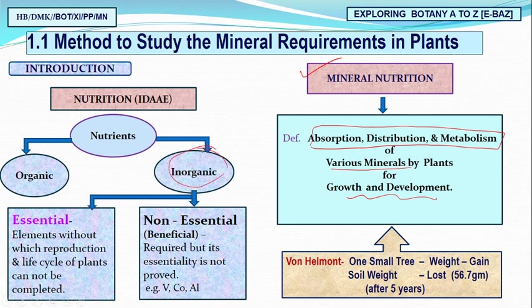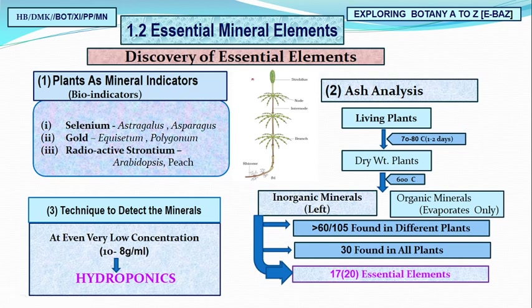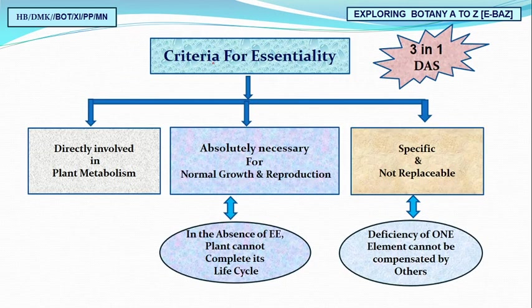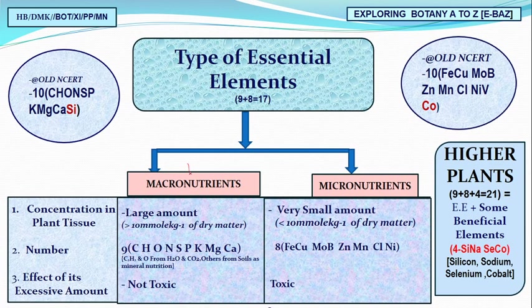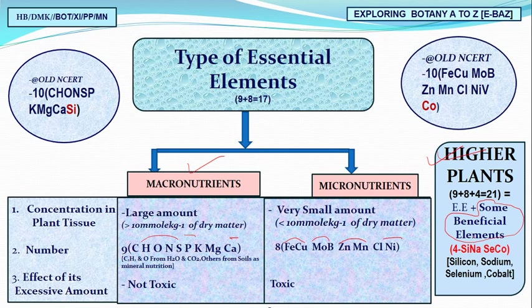We found how essential elements were discovered through ash analysis, and concluded there are 17 essential elements according to the new NCERT. We studied the three criteria of essential elements: directly involved in plant metabolism, absolutely necessary for growth and reproduction, and specific — cannot be replaced. We discussed macronutrients — total nine, remembered as CORN SPK MuGKa — and nine micronutrients remembered as FEKO MOBILE ZAN MAN KAL KNEE.